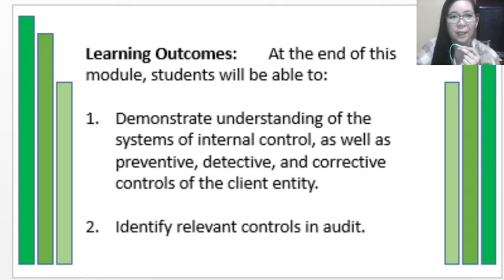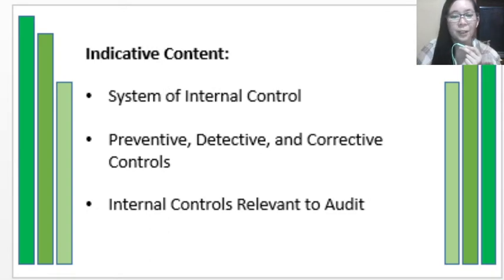For the learning outcomes, at the end of this module you will be able to understand the system of internal control as well as the three different types of controls of the client entity, and you will be able to identify the relevant controls in an audit. The main topics are: the system of internal control, preventive, detective, and corrective controls, and internal controls relevant to the audit.